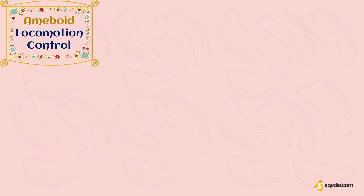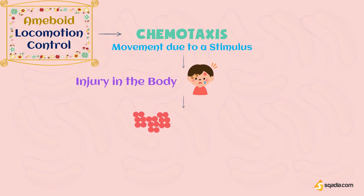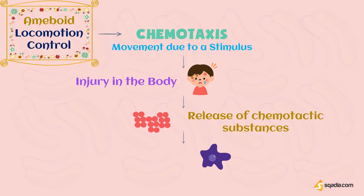How is amoeboid locomotion controlled? This motion is controlled by a process called chemotaxis. Chemotaxis is the movement caused due to a stimulus. When a stimulus is present — for example, an injury — several substances are released known as chemotactic substances, and cells move toward them through amoeboid movement.